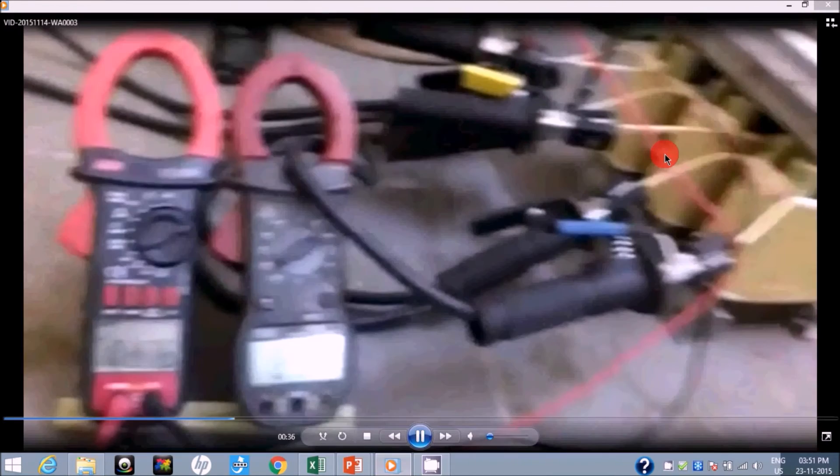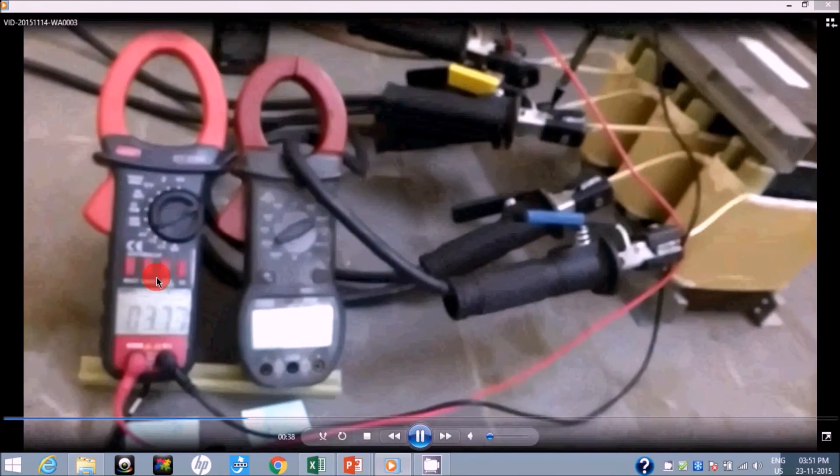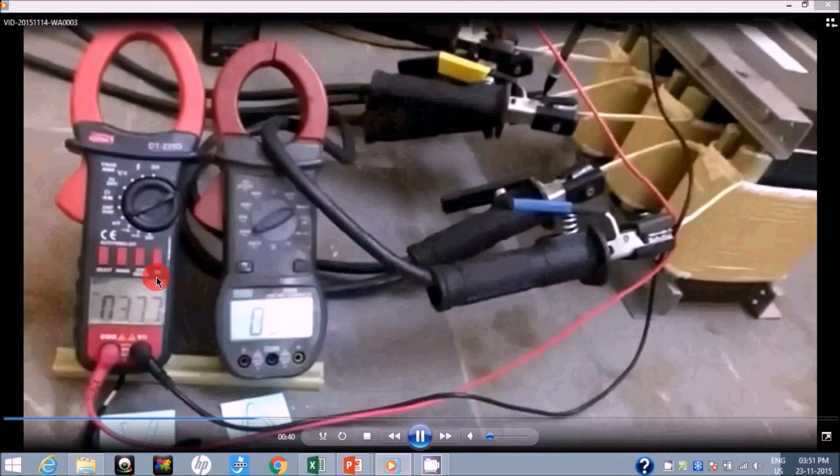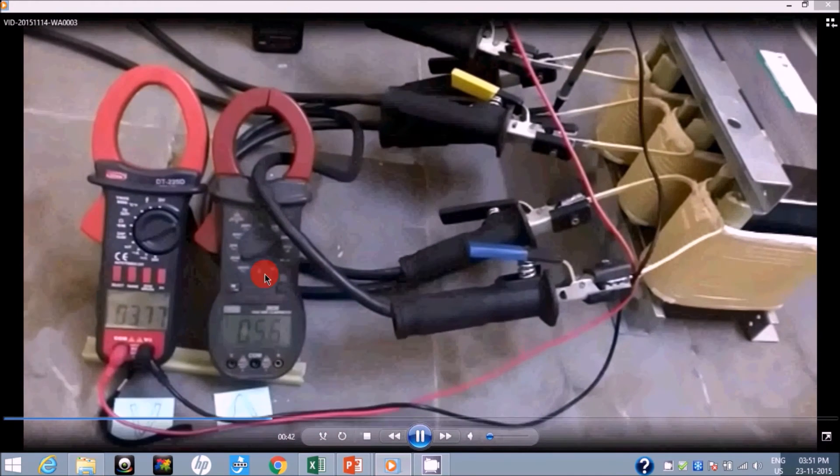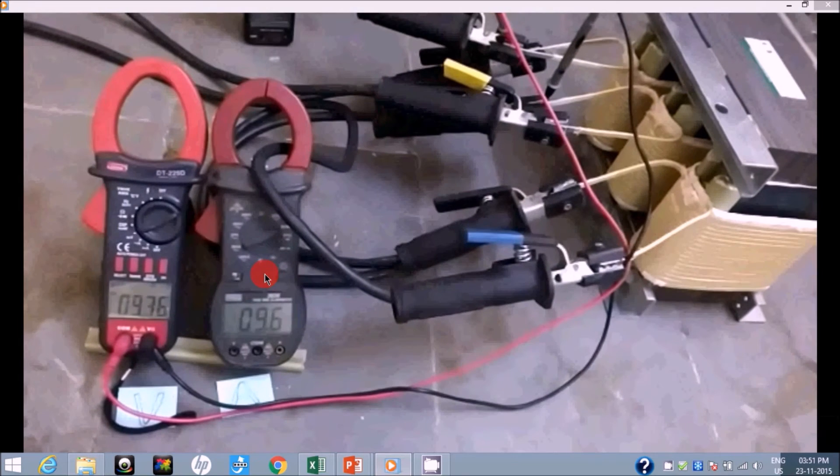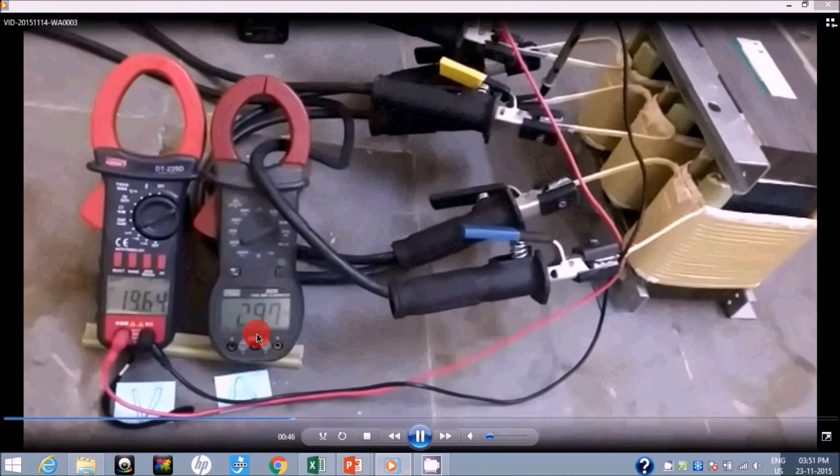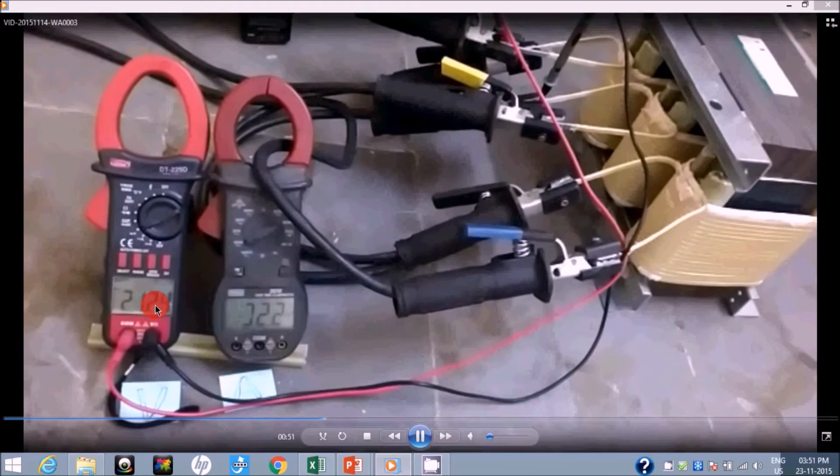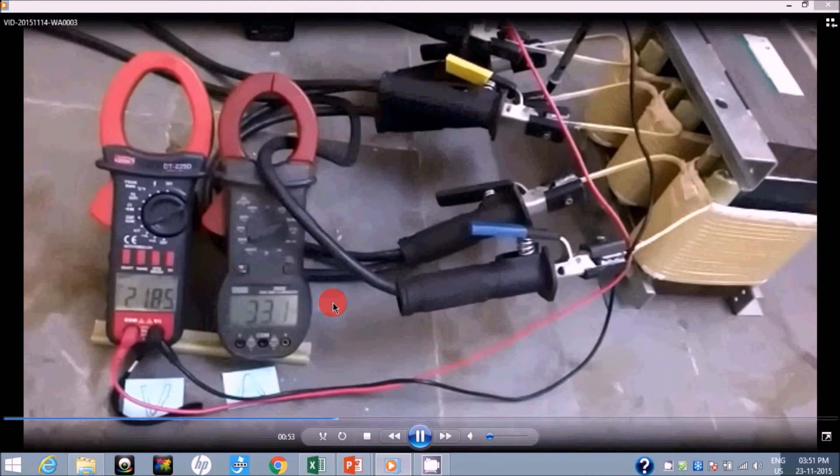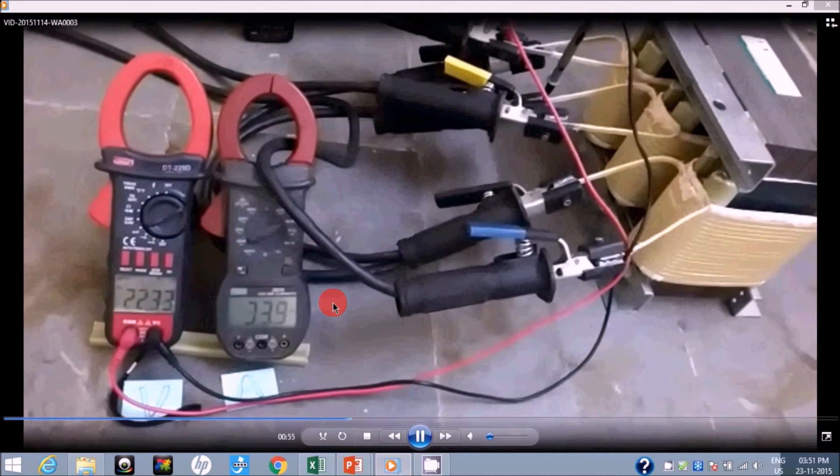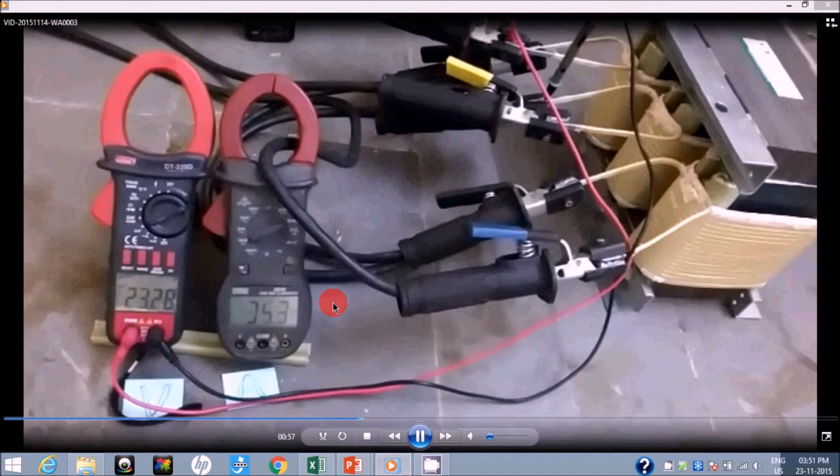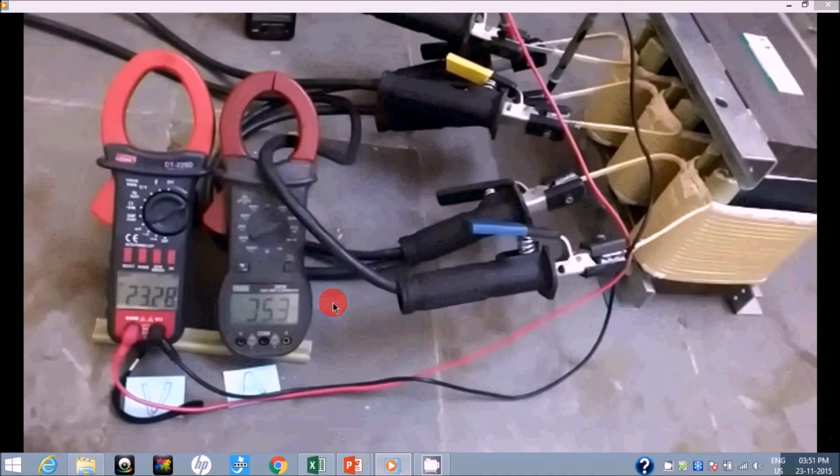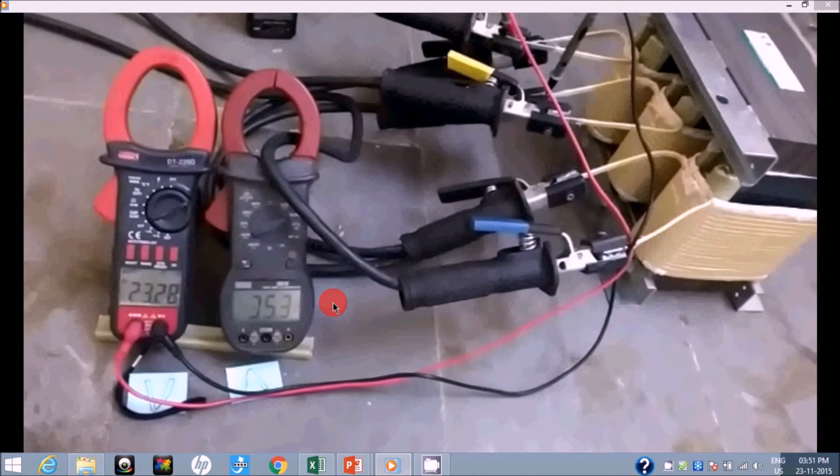So this is the setup that we have made. Now this left clamp tester will show you the voltage and the right one will show you the current. Now we will start injecting the currents through this probe. Now at 29 ampere, 19.6 volts we got. Now we are increasing the current and we will see what voltage value is increased to check the proportionality basically.